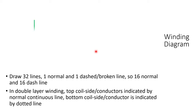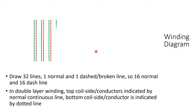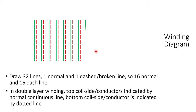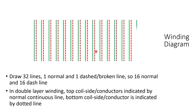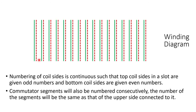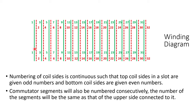Referring this winding table, we will now draw 32 lines — 16 normal and 16 dashed or broken lines. In double layer winding, the top coil side is indicated by a continuous line and the bottom coil side is indicated by a dotted line. Numbering of coil sides is continuous such that top coil sides in a slot are given odd numbers and bottom coil sides are given even numbers. Commutator segments will also be numbered consecutively, and the number of a segment will be the same as that of the upper coil side connected to it.